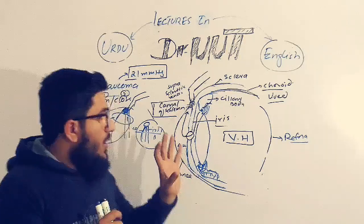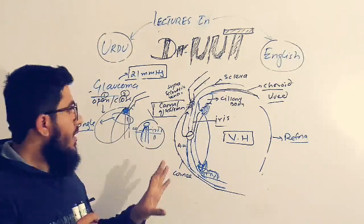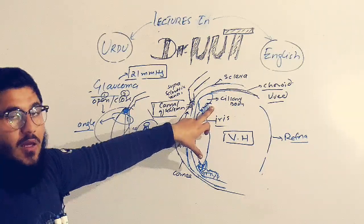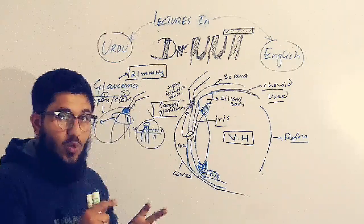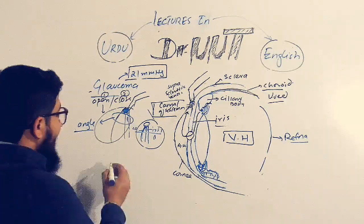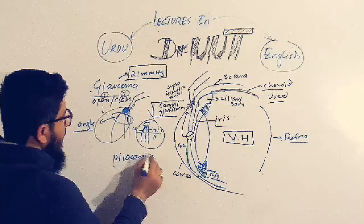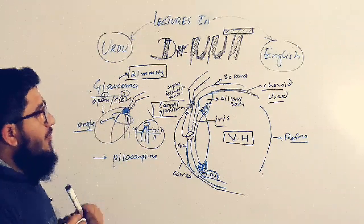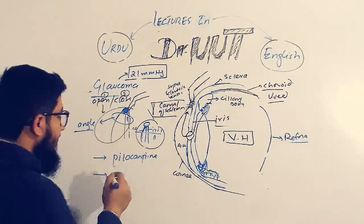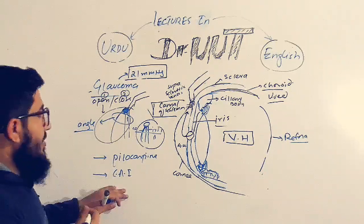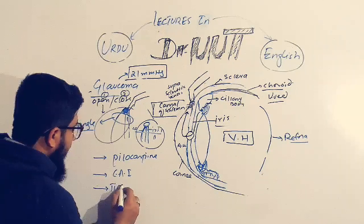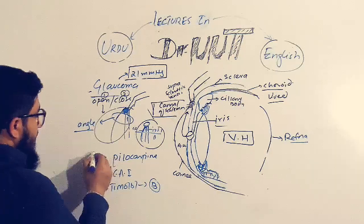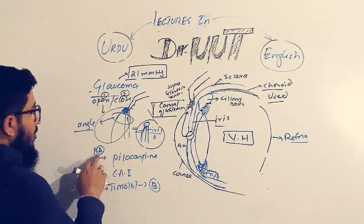Now we move to the pharmacology of glaucoma. Glaucoma can be treated by a number of drugs that stop the secretion of aqueous humor. These include parasympathomimetics such as pilocarpine, which is the first and prominent drug used to treat glaucoma; carbonic anhydrase inhibitors, another class of drugs; and timolol, a beta-selective antagonist.